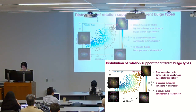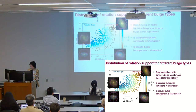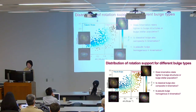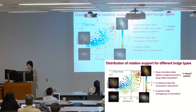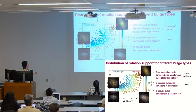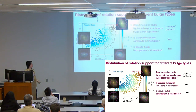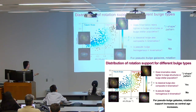Coming back to the G-shaped figure, we can now answer our questions. Does kinematics relate more tightly to bulge structure or bulge star formation? We always see that rotation support decreases as lambda_c1 increases and as central age increases, and there are clear axis offsets tracing the G-shape. Are classical bulges also composite in kinematics? Yes, but the color distribution is only weakly related to the y-axis. Most importantly, are pseudobulges homogeneous in kinematics? No — although pseudobulges seem homogeneous in stellar population, they are not homogeneous in kinematics, and rotation support increases as the central age increases.